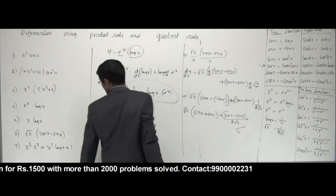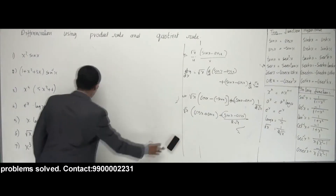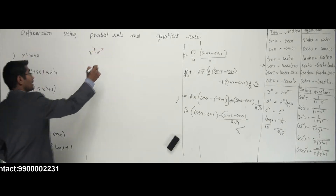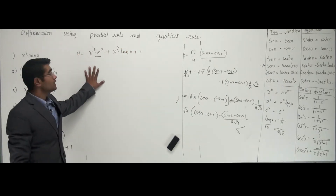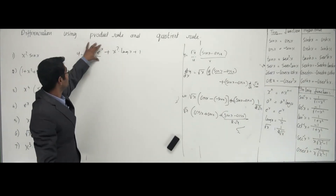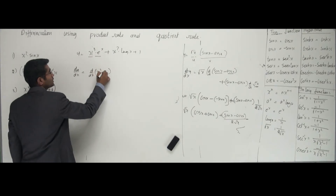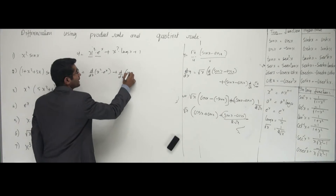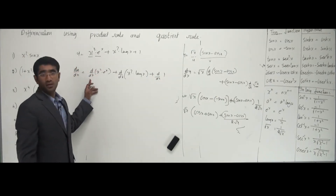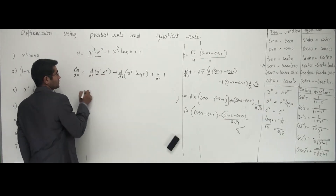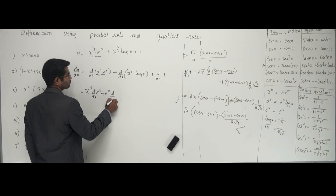The last one: y = x³·eˣ + x²·log(x) + 1. I can see two separate product terms here, so I use the product rule on each separately. dy/dx = d/dx[x³·eˣ] + d/dx[x²·log(x)] + d/dx[1]. For the first pair, using product rule: x³ · d/dx[eˣ] + eˣ · d/dx[x³].